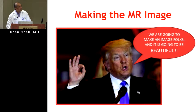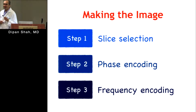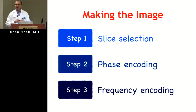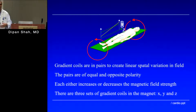Next I'm going to talk about how we use this to actually make an image. The first step is slice selection. The second step is phase encoding, and the third is frequency encoding. Simplified: slice selection picks my Z-axis, and then phase and frequency encoding encode the image in the X and Y planes.